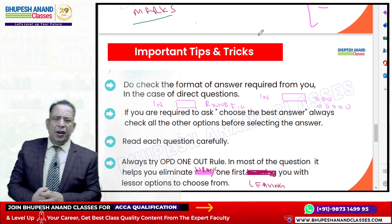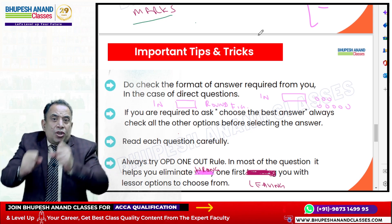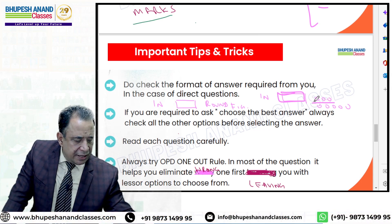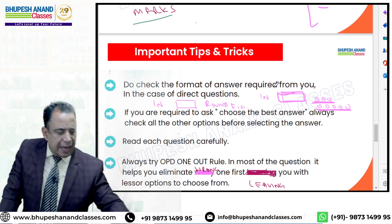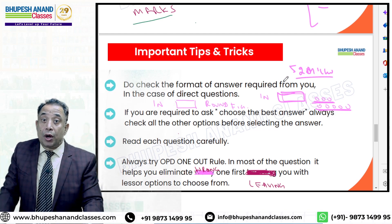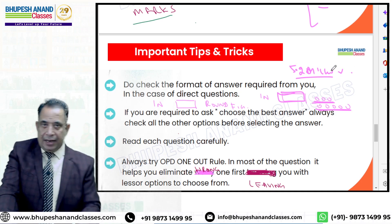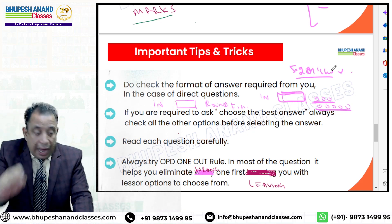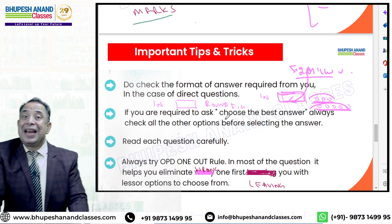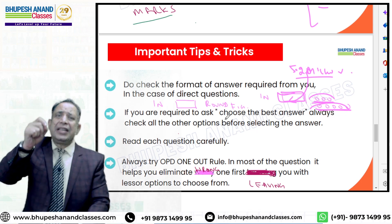पहली tip: read the question carefully - you have to see what is being asked. Direct questions में check करना है कि figures में box दे देंगे और last में लिखा होगा 'in thousands' या 'in lakhs'। जैसे आपका answer है 52 million - तो check करना है 52 million का मतलब क्या है। 1 million में 10 lakhs होते हैं - तो answer को thousands या lakhs में convert करके लिखना है; पूरा answer लिखेंगे तो गलत होगा।